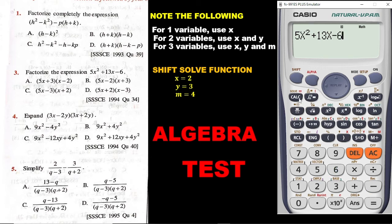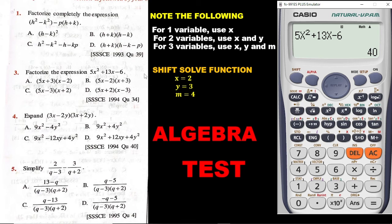Now remember we are using the same instruction: wherever you see X, put 2; where you see Y, put 3; and where you see M, put 4. So I click on solve, and in place of X I put 2. We are getting 40. So the question is: which of these possible answers, when you put X equal to 2 into them, will give you 40?